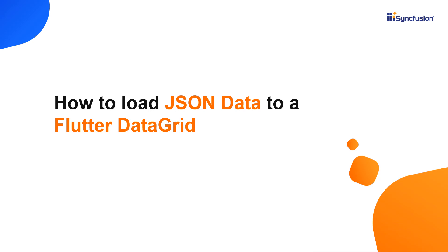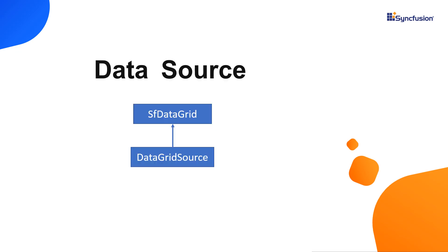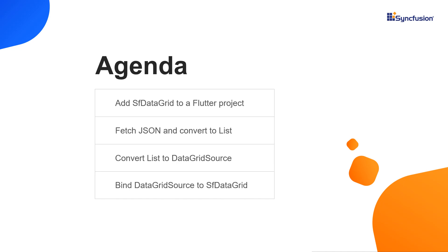Hi everyone. Welcome to this video on how to load JSON data to a Syncfusion Flutter data grid. Syncfusion Flutter data grid supports binding data sources of type data grid source. To bind JSON data, you need to convert it to a data grid source type. In this video, you will see how to add a Syncfusion data grid to a Flutter application, fetch JSON data from an online source and convert it to a list collection, create rows using the data grid source class, and then bind the rows to the data grid.